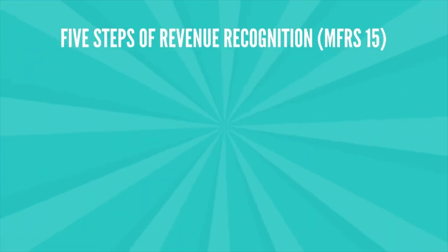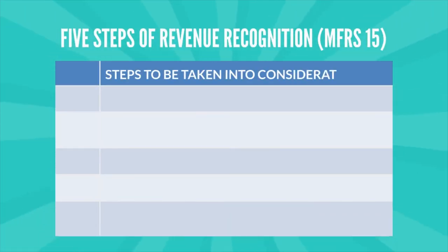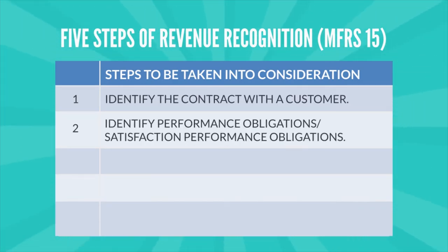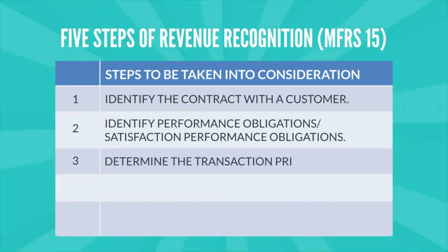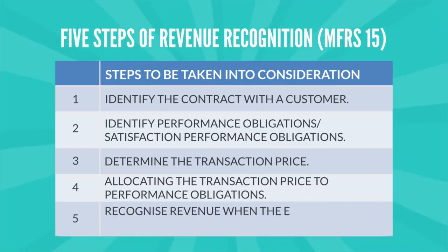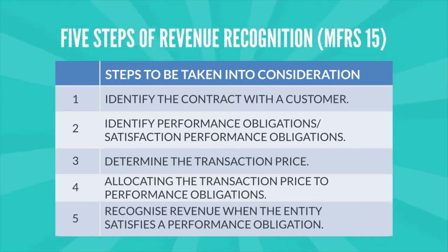There are basically five steps of revenue recognition as prescribed under MFRS 15. First, identify the contract with the customer. Second, identify performance obligations. Third, determine the transaction price. Fourth, allocating the transaction price to performance obligations. Fifth, recognize revenue when the entity satisfies a performance obligation.